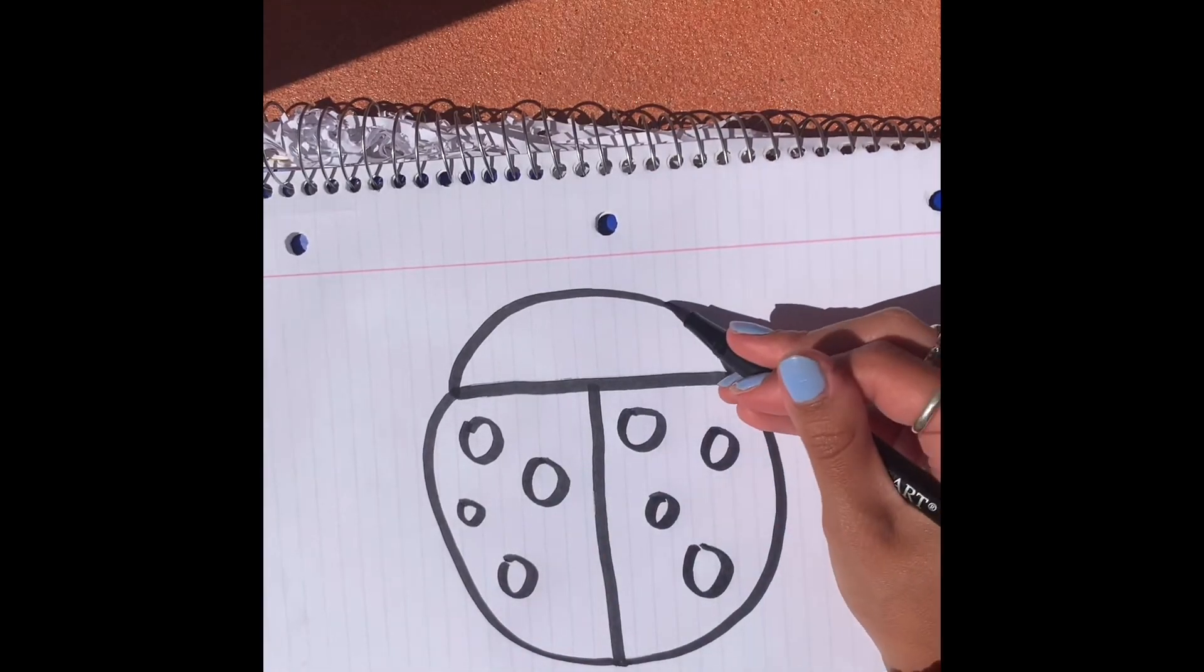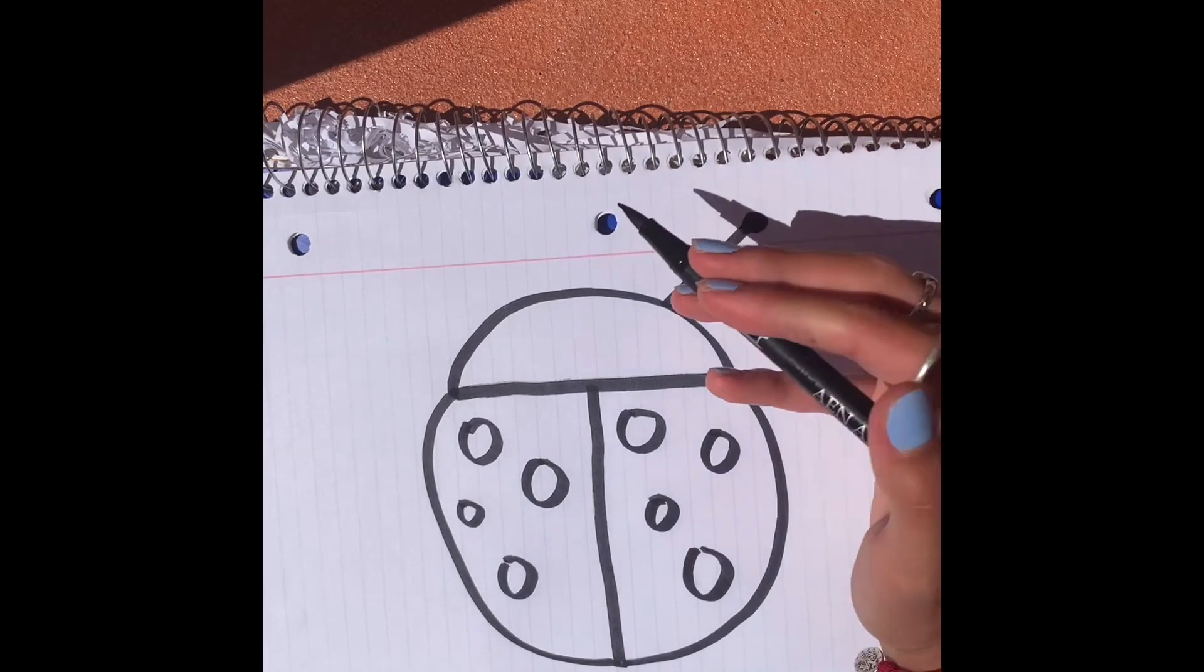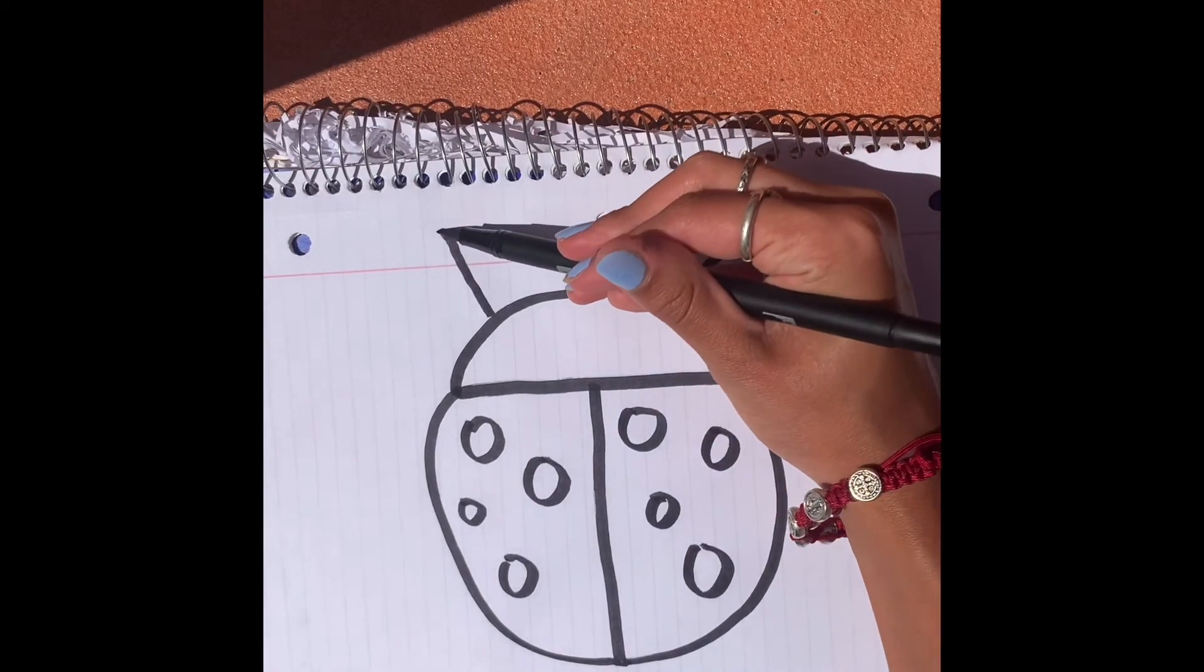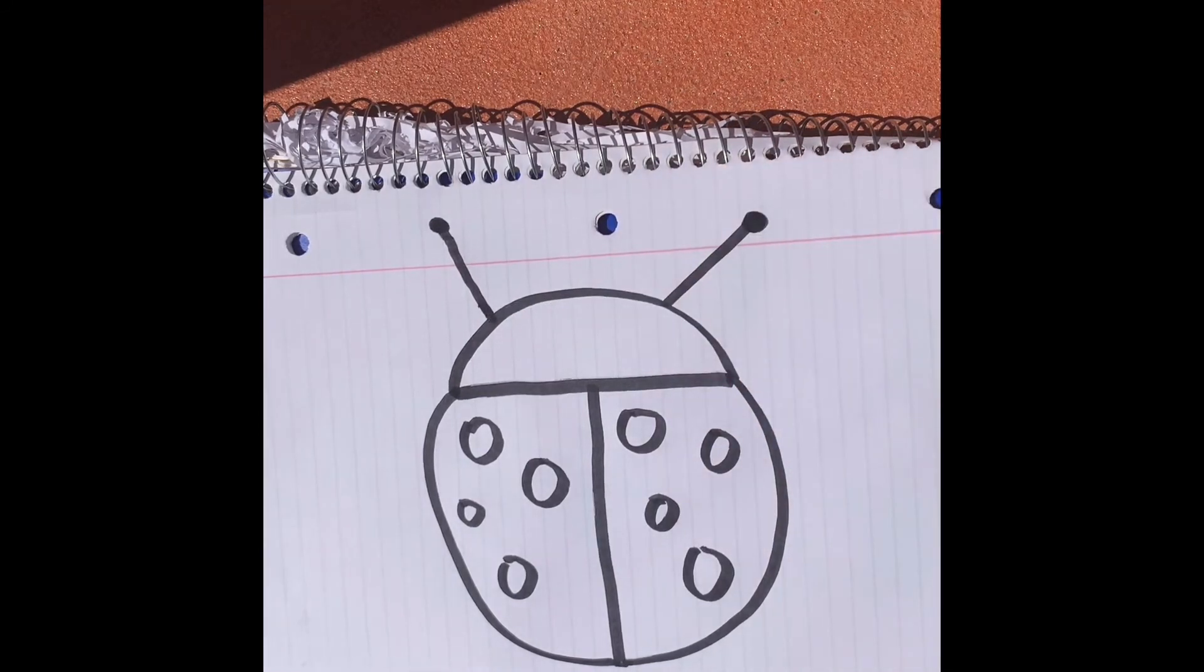And then you're going to draw two lines at the top and put little dots for their antennas.